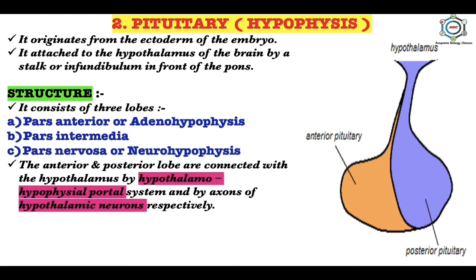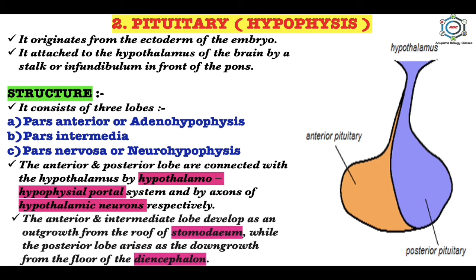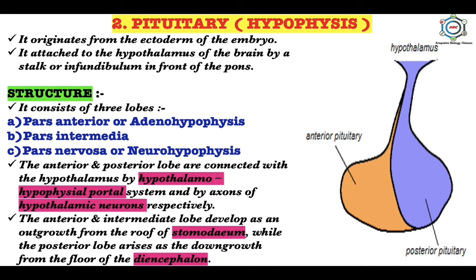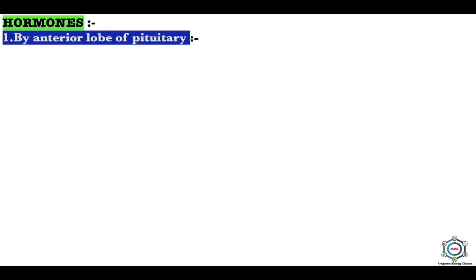The anterior and posterior lobes are connected with the hypothalamus by the hypothalamo-hypophysial portal system and by axons of hypothalamic neurons respectively. The anterior and intermediate lobe develops as an outgrowth from the roof of the stomodeum, while the posterior lobe arises as a downgrowth from the floor of the diencephalon.